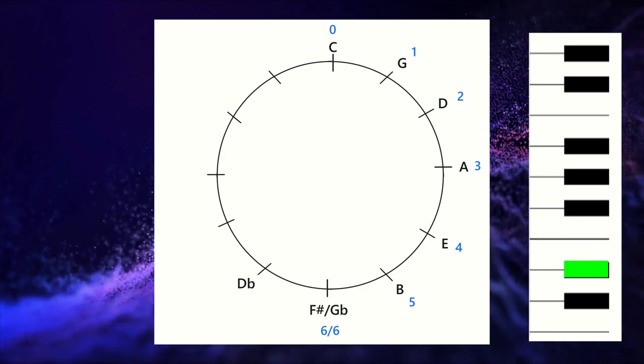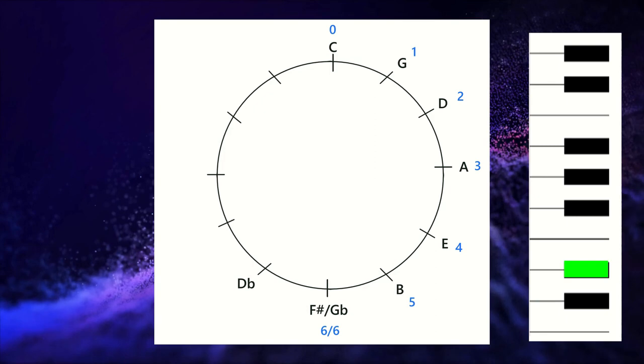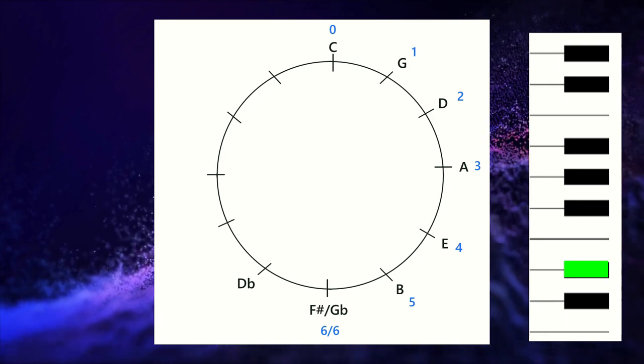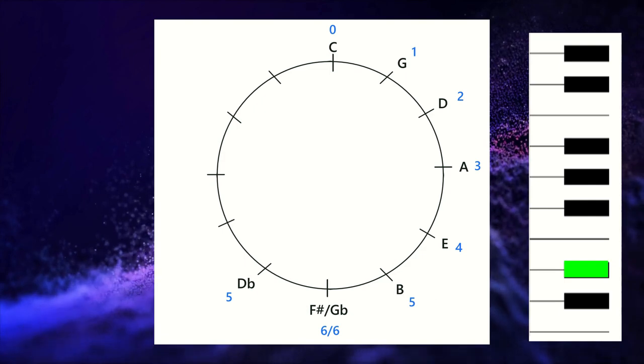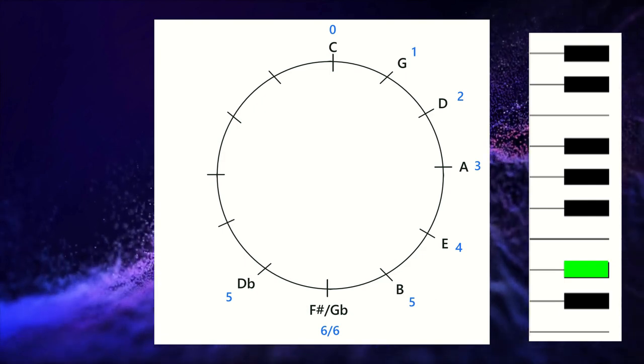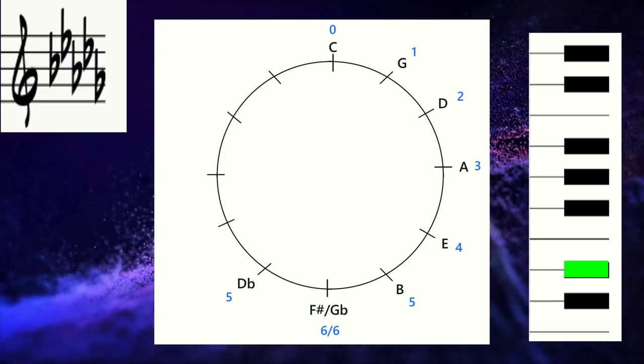Now this is where our clock analogy starts to fall apart a little bit, because from this point on we're going to be subtracting flats. So when we were in G flat we had six, and now in D flat we have five, and we'll be subtracting one as we go to each next stop on the circle.